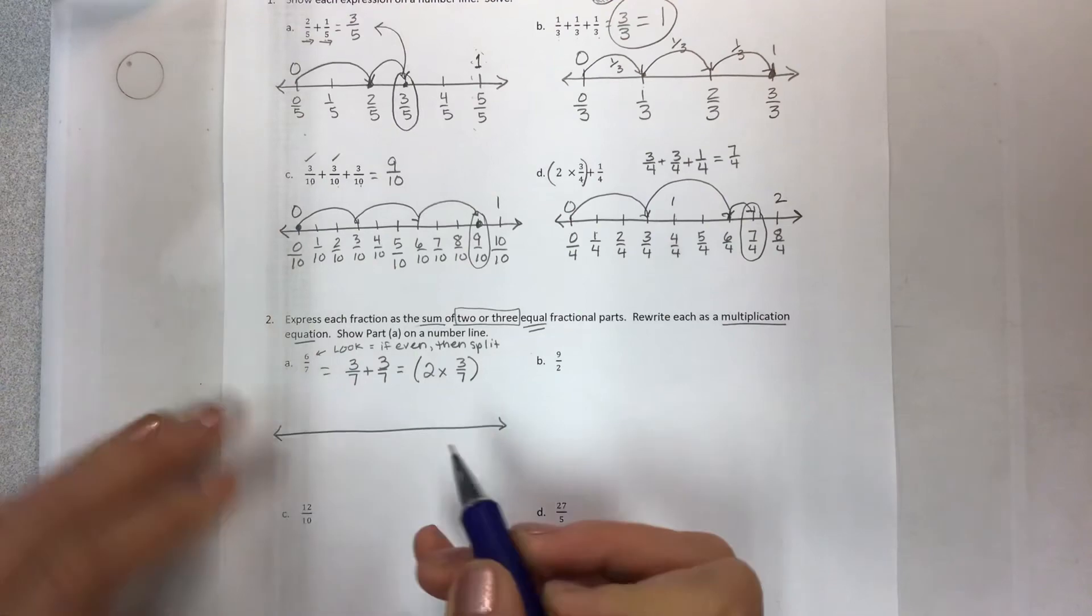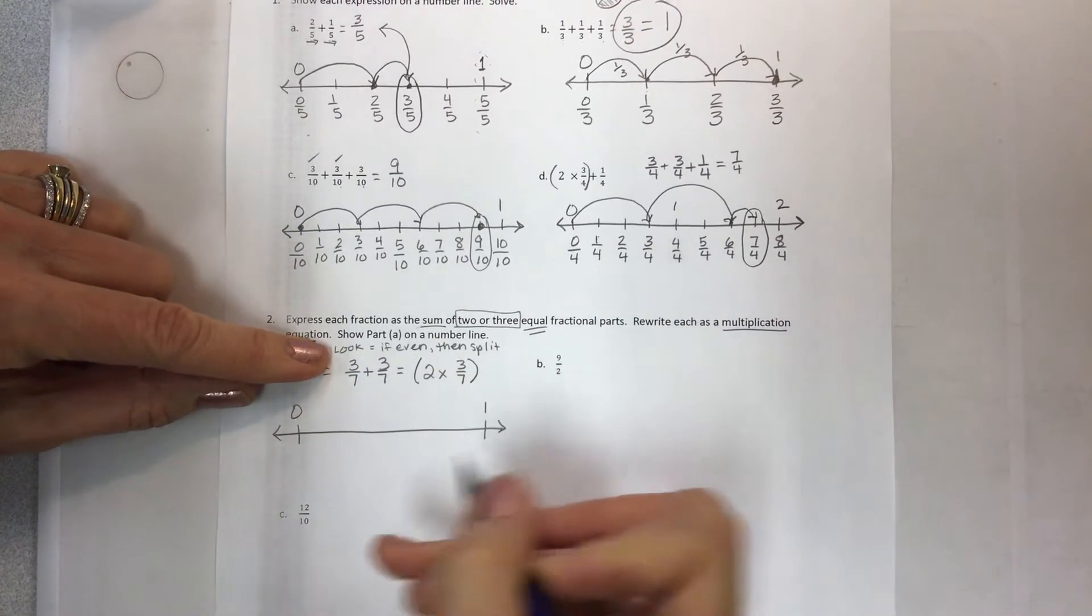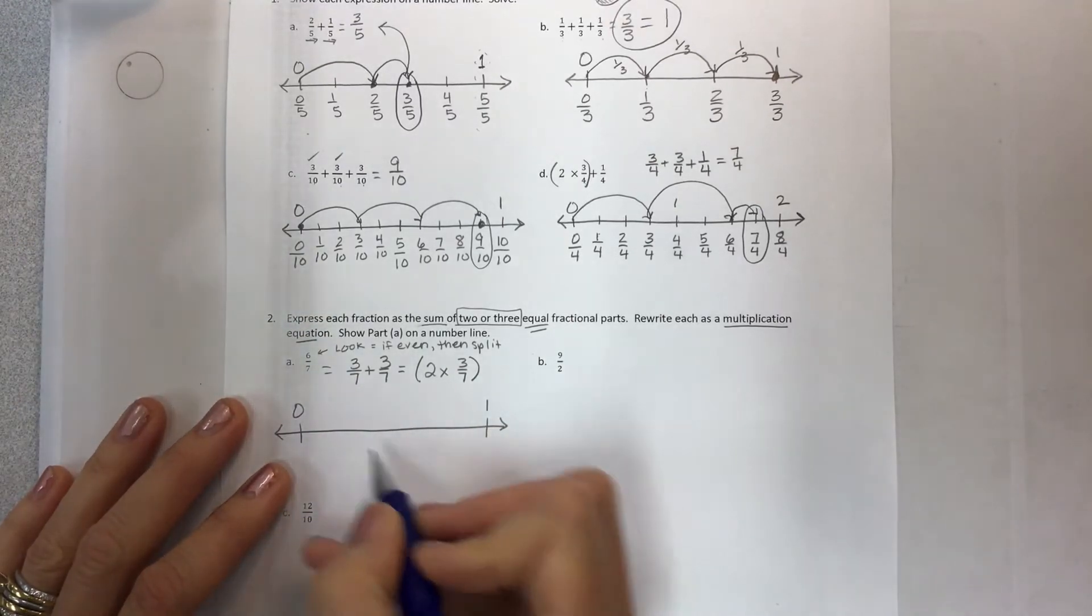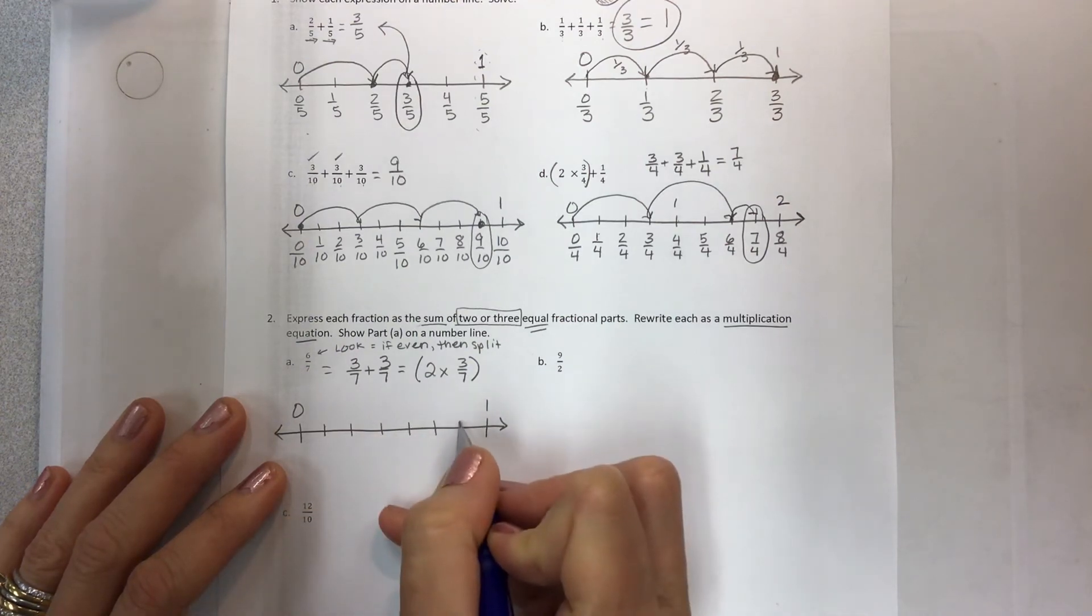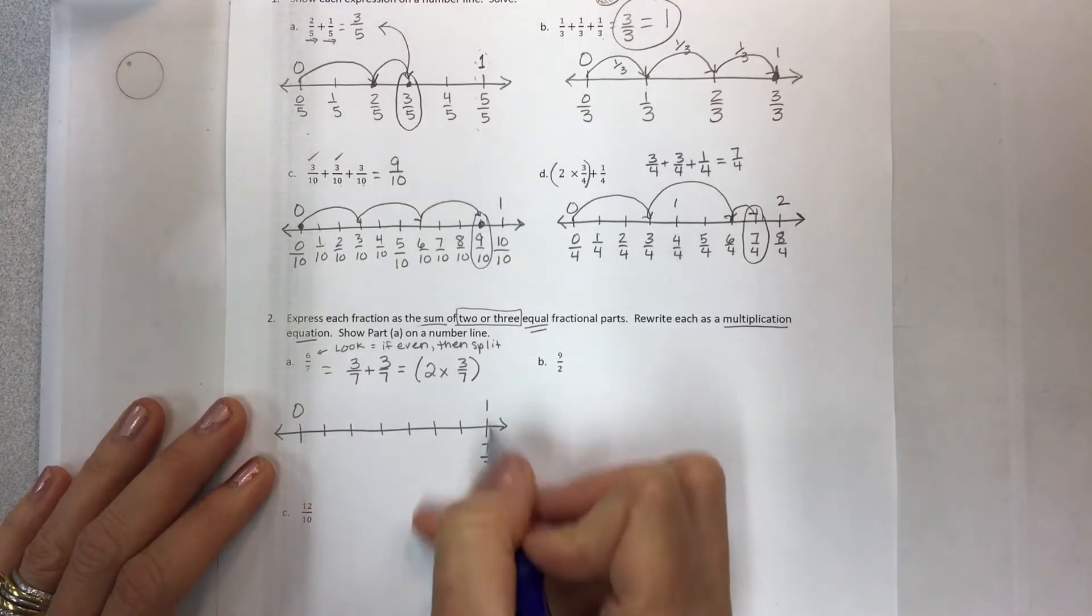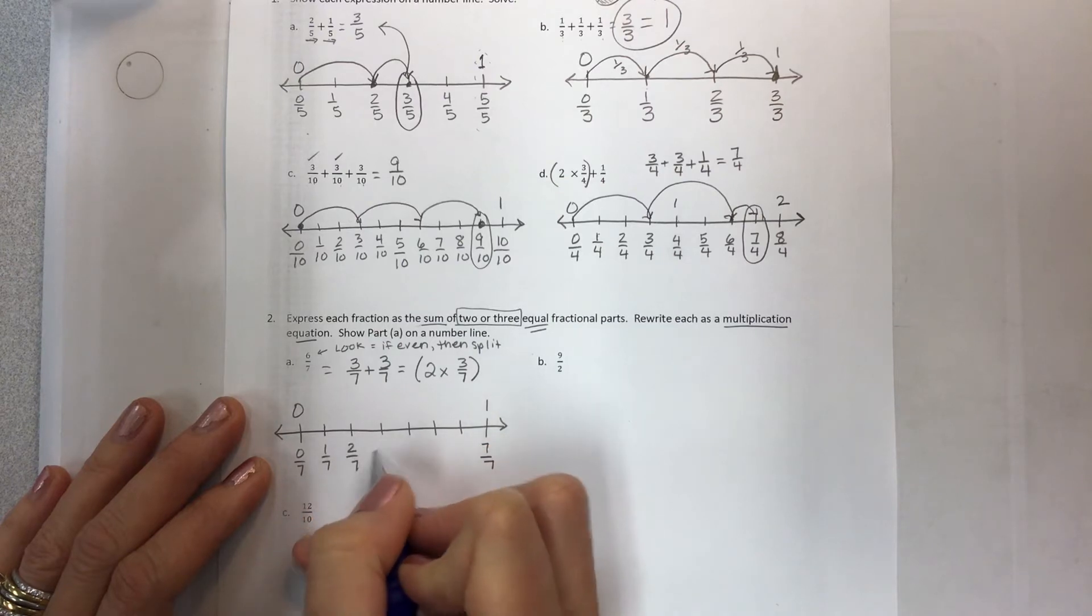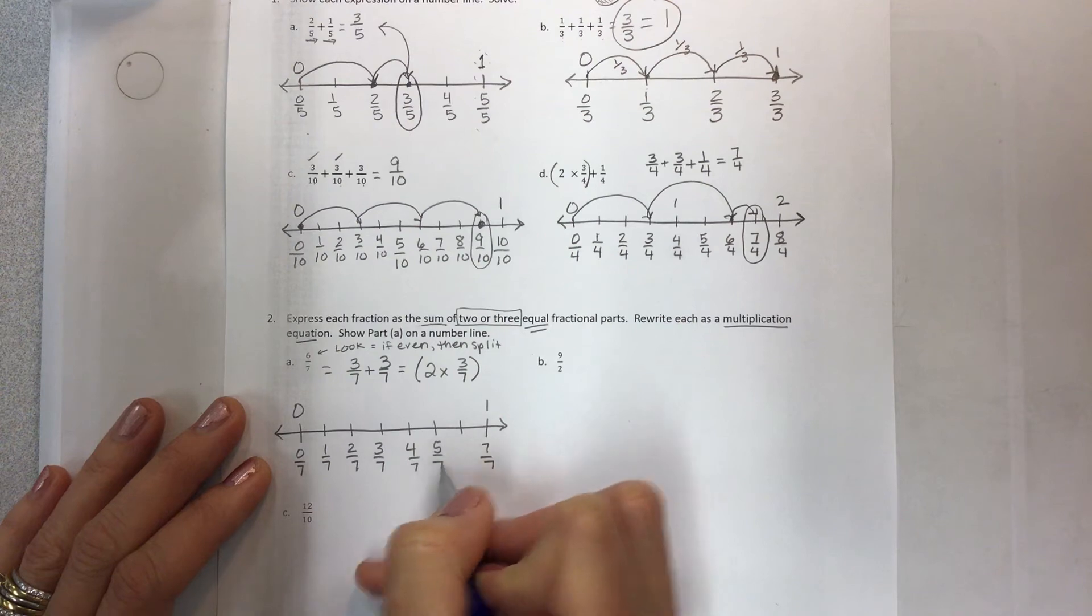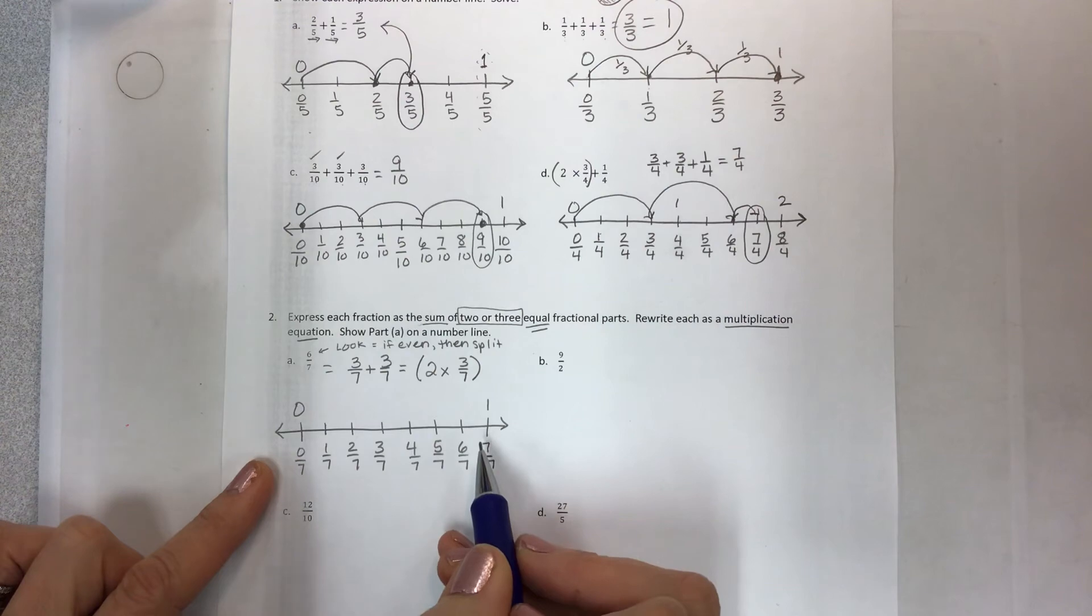Except for the number line. So we're going to break our zero to one into seven pieces. I hope I can do this evenly. I will try my best. One, two, three, four, five, six, seven. Remember that seven sevenths has to be at the one. Zero sevenths, one seventh, two sevenths, three sevenths, four sevenths, five sevenths, six sevenths, and seven sevenths. Make sure you have the right number of tick marks.